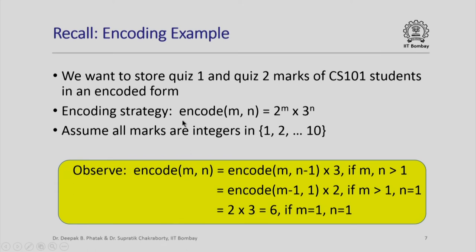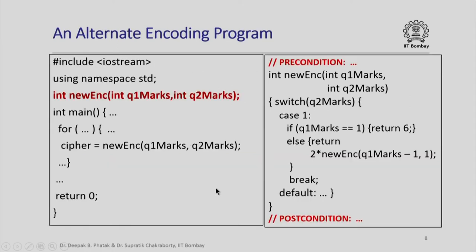What I want to draw your attention to is that when we specified the problem the original way, we came up with a C++ program that solved it. But now, instead of specifying encode(m,n) in that manner, I am writing the same function in this alternative manner: to compute encode(m,n), if I already had the value of encode(m, n-1), I could multiply that by 3 to get encode(m,n), and similarly using encode(m-1, 1). Once you agree that encode(m,n) can be written like this, it naturally lends itself to an alternate recursive program.